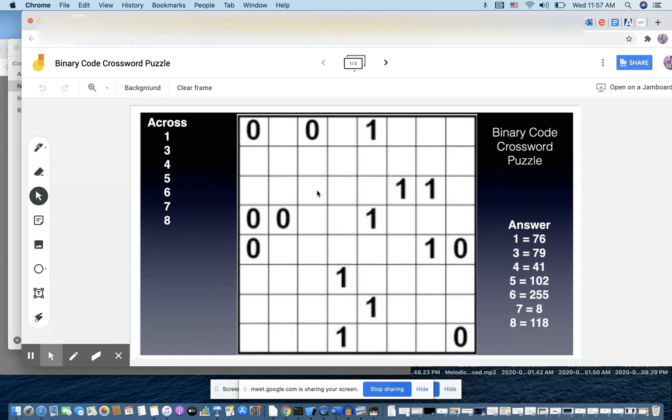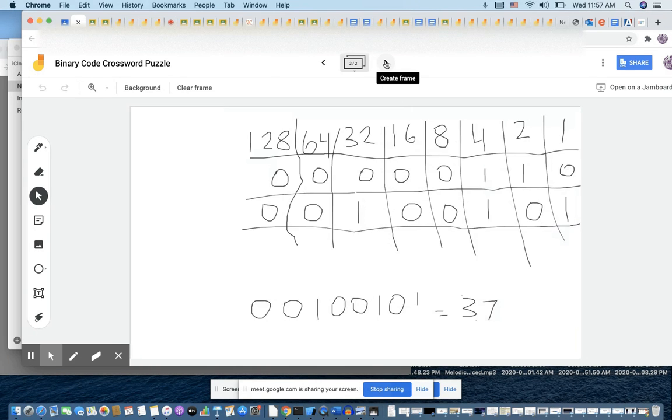You just write the binary number that equals the decimal number that's shown here. So like, for example, for number one, we could put like 75 or no? No. Let me show you what I mean by that. For the first one, you put 76, but in binary form. Exactly. In binary form.